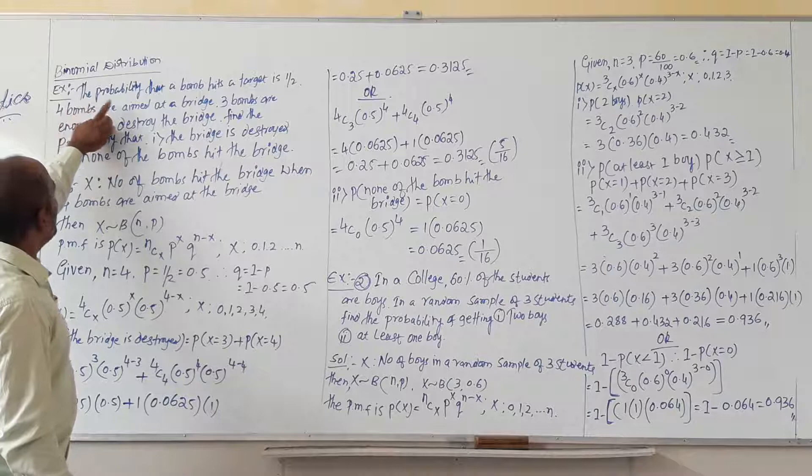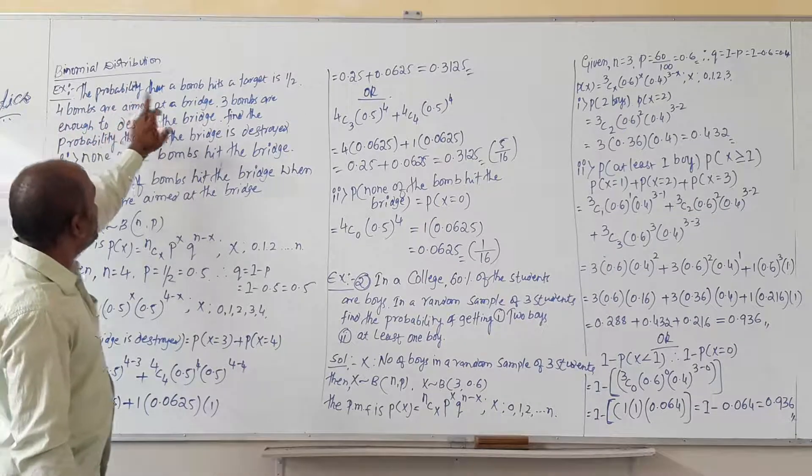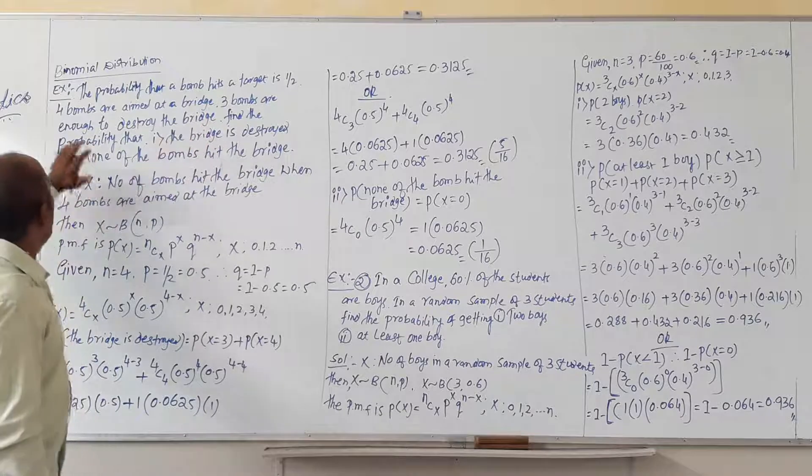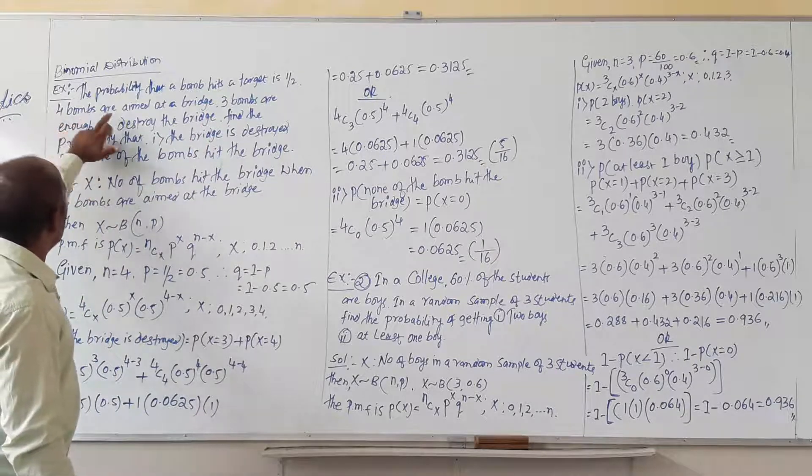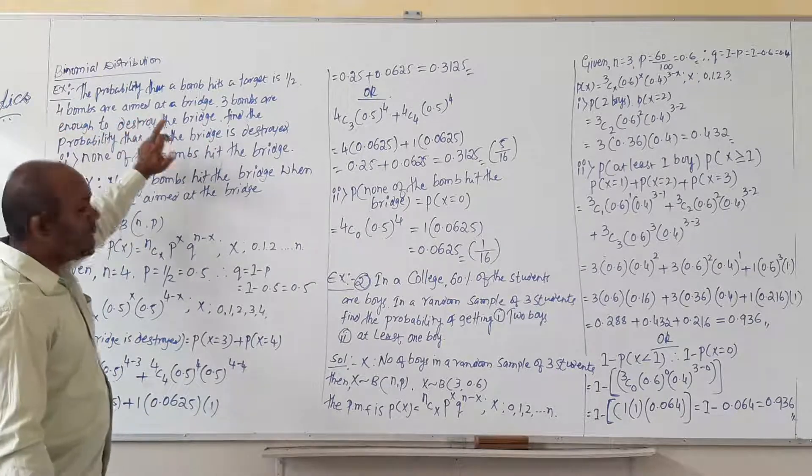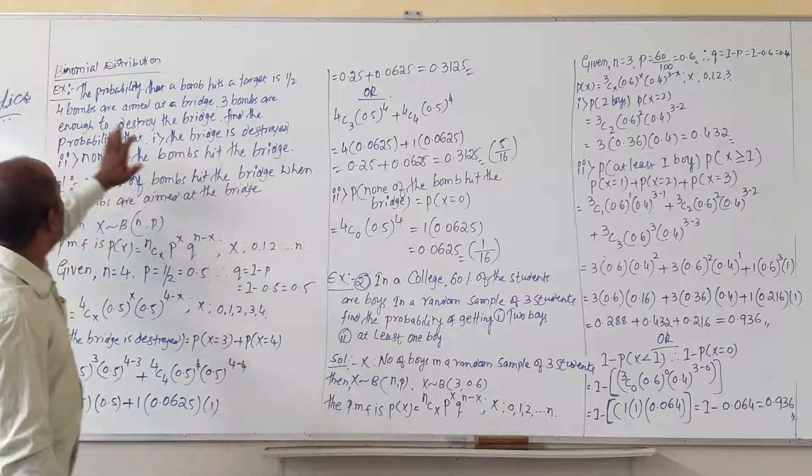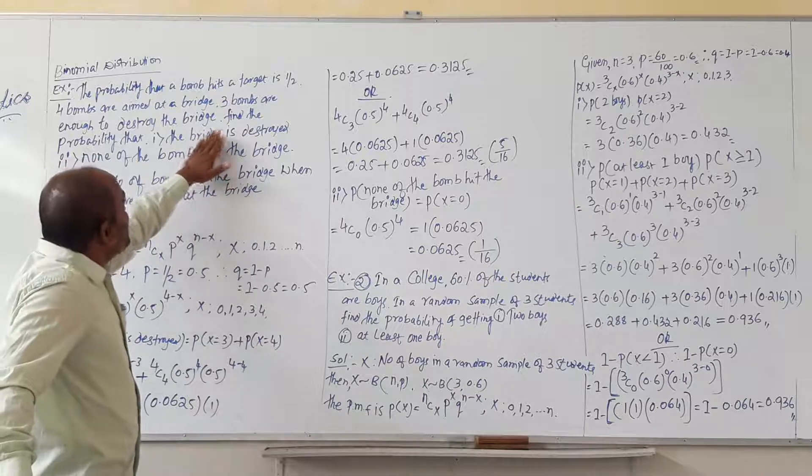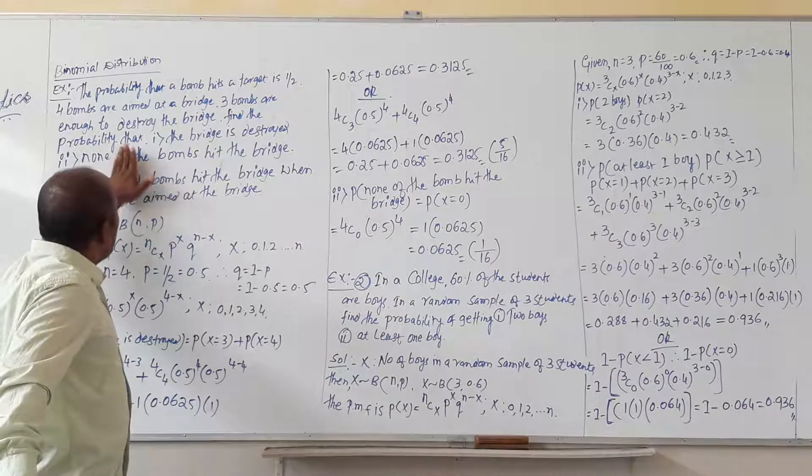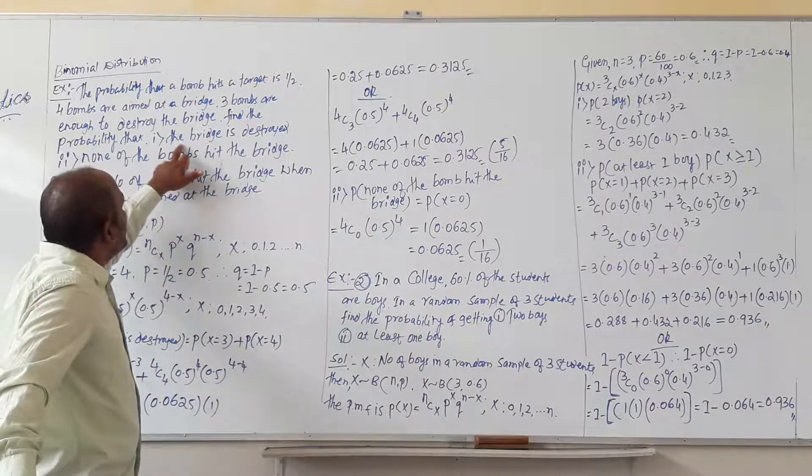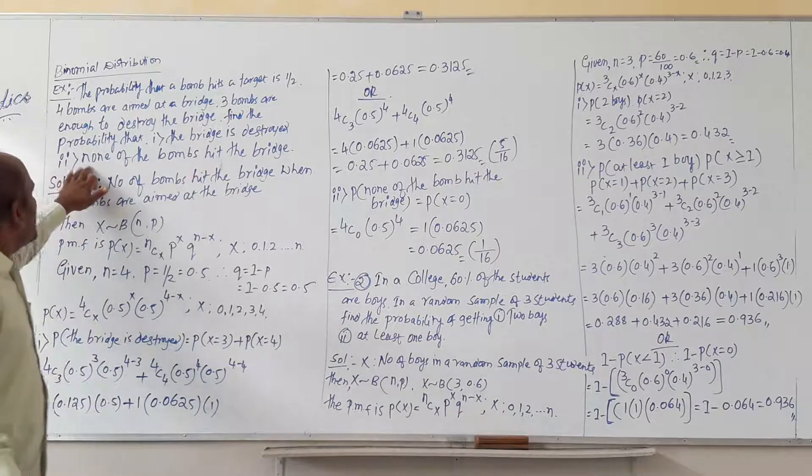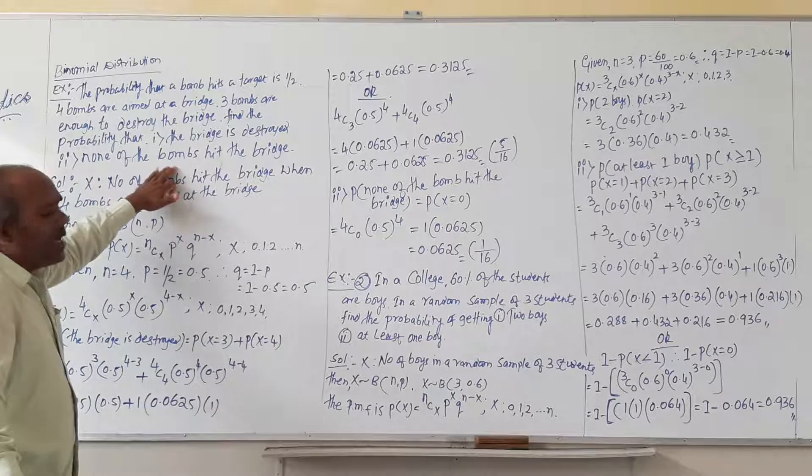The probability that a bomb hits a target is 1 by 2. Four bombs are aimed at a bridge. Three bombs are enough to destroy the bridge. Find the probability that: first question, the bridge is destroyed; the second question is none of the bombs hit the bridge.